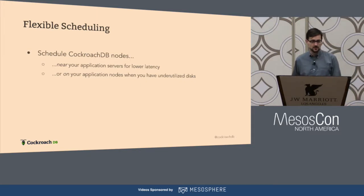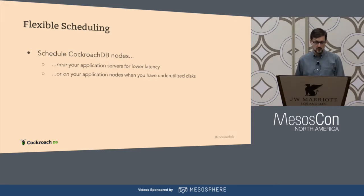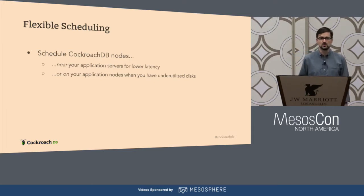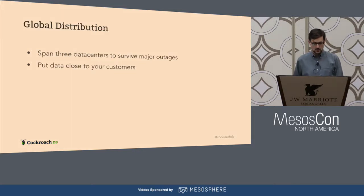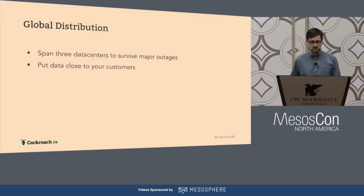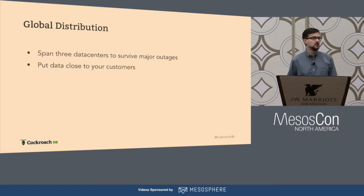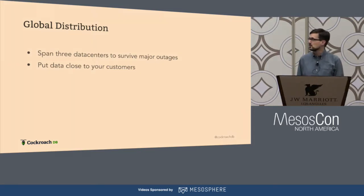DCOS gives us flexible scheduling for different database nodes. You can schedule your CockroachDB nodes near your application servers for lower latency. You can even schedule them on your application servers if you have unused disk capacity, then you can just start up a CockroachDB node to make that disk space available as part of your database. You can span your cluster across the globe — with at least three data centers, you can survive the outage of any one data center. This gives you the flexibility to put your data close to your customers and provide them with low-latency access.